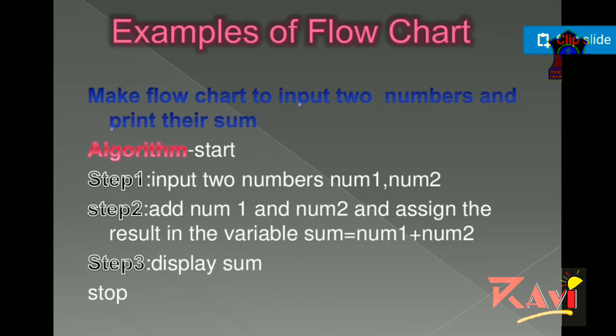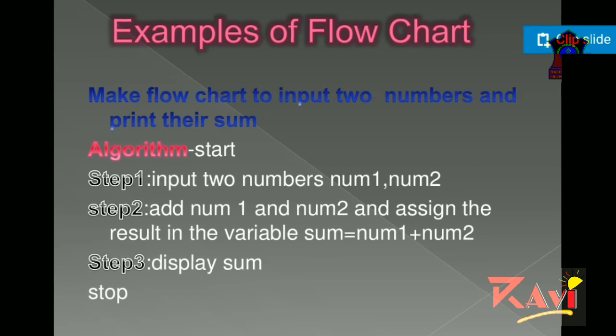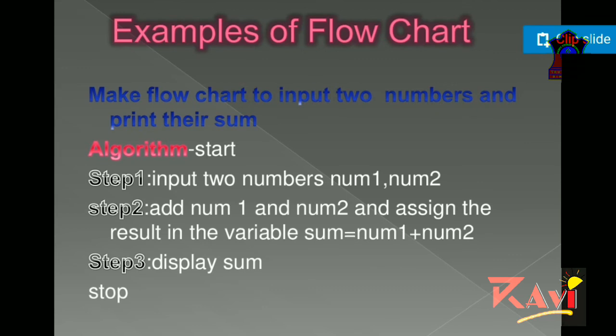Now there are some examples of flowchart. Make flowchart to input two numbers and print their sum. First same algorithm, start, step one, input two numbers number one and number two, step two, add number one and number two and assign the result in the variable sum equals to number one plus number two, display sum and stop.